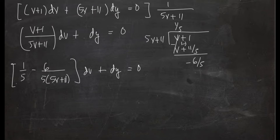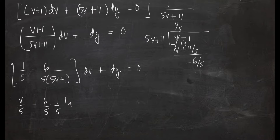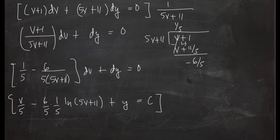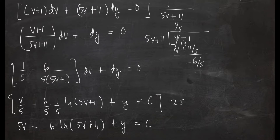We can now integrate: the result is v/5 minus (6/5) times (1/5) ln|5v + 11| plus y = c. With the balancing factor of 1/5 for the logarithm term, multiplying through by 25 gives 5v - 6 ln|5v + 11| + 25y = c.